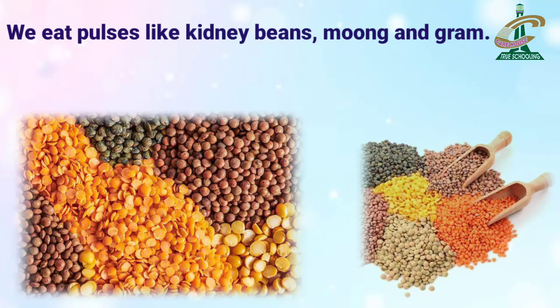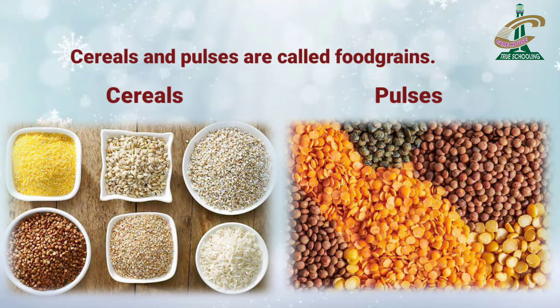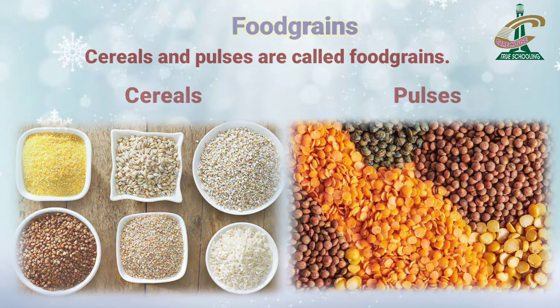We eat pulses like kidney beans, moong, and gram. ये क्या केहलाती हैं? Pulses — दालें केहलाती हैं ये. जैसे के चने की दाल, मूंग की दाल और kidney beans जिसको हम लोबिया केहते हैं. Cereals and pulses — इन दोनों को मिलाके हम क्या केहते हैं? Food grains. Cereals and pulses are called food grains.